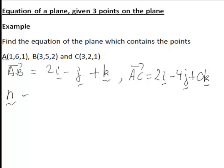Hence you can actually now find the normal vector to the plane N by finding the vector product of your two vectors that lie on the plane. In this case the vector product AB cross AC.